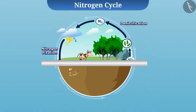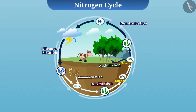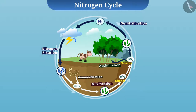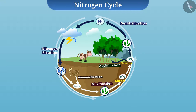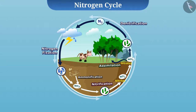The nitrogen cycle is very important for us. However, due to many human activities, it does not remain balanced and it affects the ecosystem at a particular place. Let's talk about one of these situations called eutrophication.